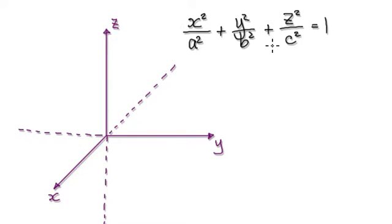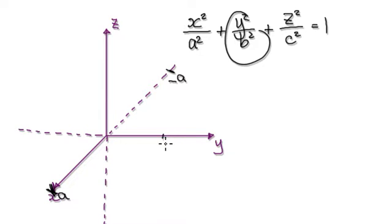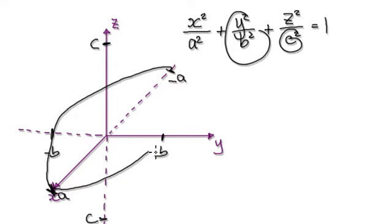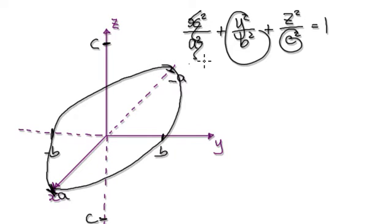So let's start sketching. Let's say a is here and negative a is here, b is here and negative b is here, c is here and negative c is here. Discarding z first — working in the x-y plane — will give us this ellipse. It goes through a in x and through b in y. Imagine it's a perfect ellipse.